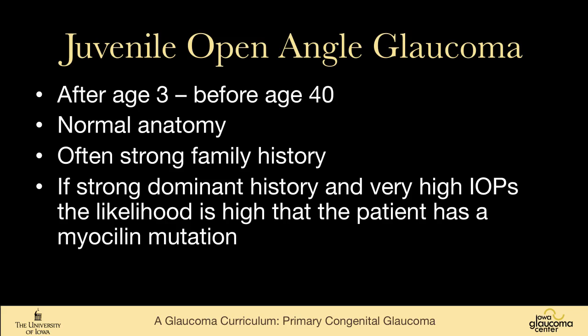A few words about juvenile open-angle glaucoma: these are people between the ages of 3 and 40. They have normal anatomy and gonioscopy is normal — the drainage system looks completely normal. They often have a strong family history. If you see somebody with a strongly dominant history and very high pressures, the likelihood is high that the patient has a myocilin mutation. Myocilin is an important gene — it causes most cases of dominant juvenile glaucoma, also a lot of non-dominant juvenile glaucoma, and 3 to 5 percent of adult primary open-angle glaucoma.